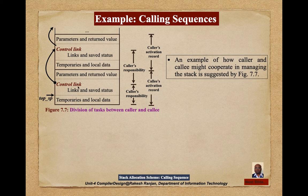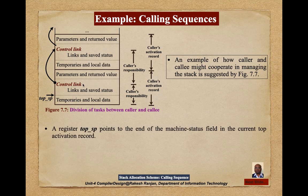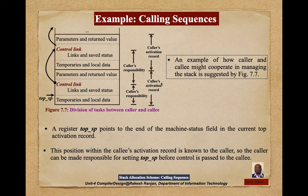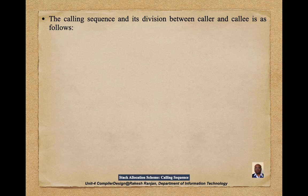The register top_sp points to the end of the machine status field in the current top activation record. This position within the callee activation record is known as the caller's boundary. The caller can be made responsible for setting top_sp — the stack pointer — before control is passed to the callee. The lower part is the callee activation record and the upper part is the caller's activation record.